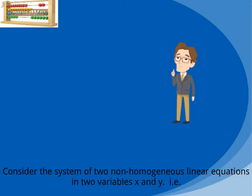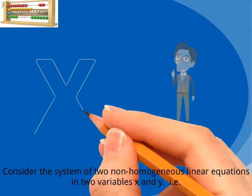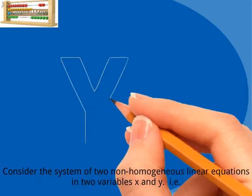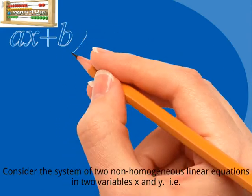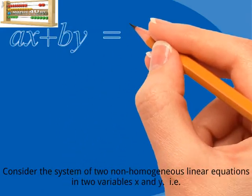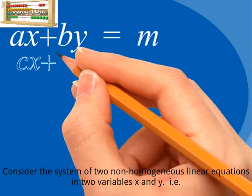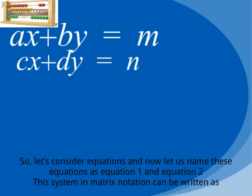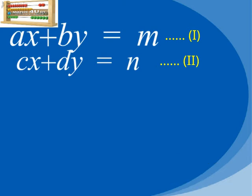Consider the system of two non-homogeneous linear equations in two variables x and y. That is, a times x plus b times y is equal to m, and c times x plus d times y is equal to n. Let us name these as equation 1 and equation 2. This system in matrix notation can be written as follows.